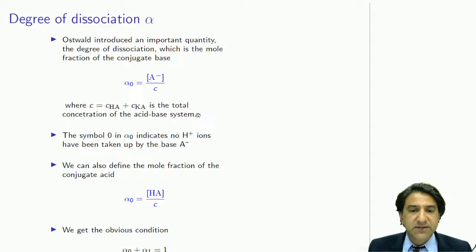We can also define the mole fraction of the conjugate acid, which is not alpha-0 here, it's actually alpha-1, this is a typo, and that means that A- has gained one hydrogen. So alpha-1 is the concentration of undissociated HA on the total amount of A stuff in solution, which is the same as what I've just told you up here, CHA plus CKA.